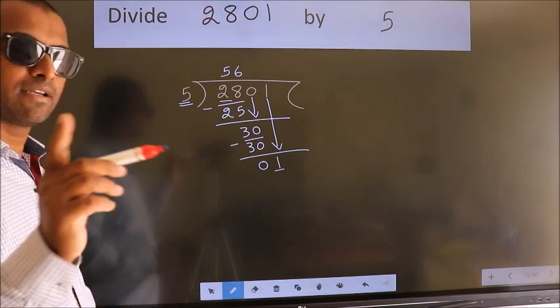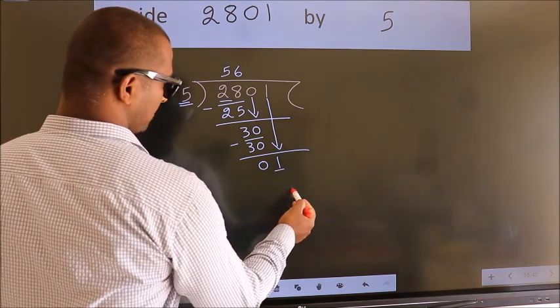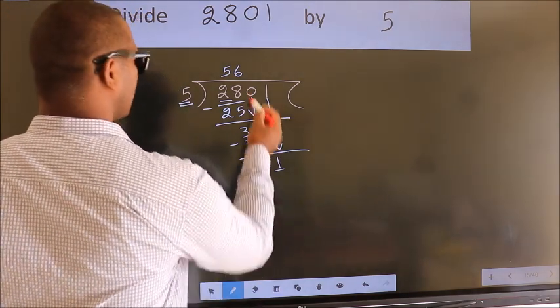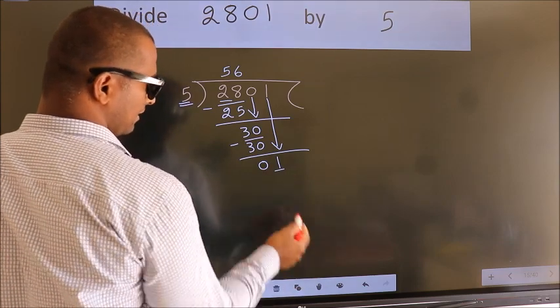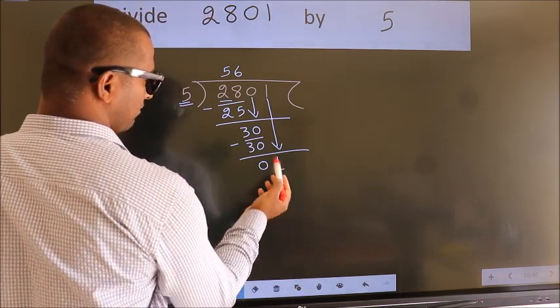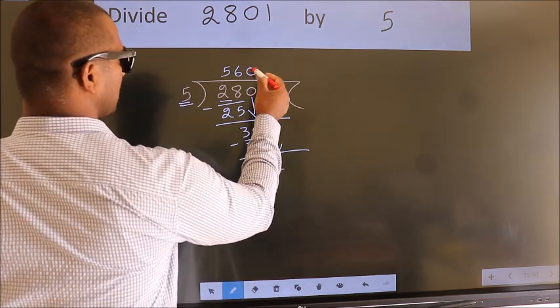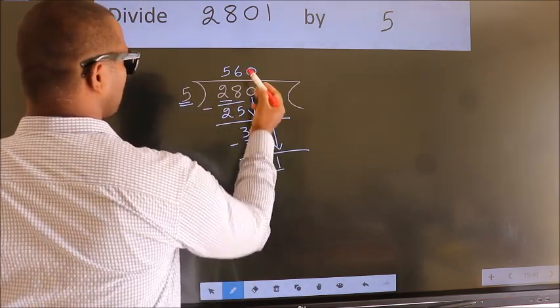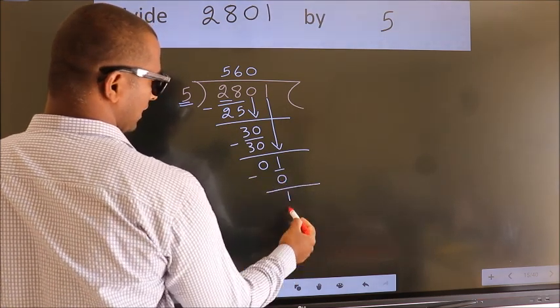Instead of that, what we should think of doing is which number should we take here. If I write 1, we get 5, but 5 is larger than 1. So what we do is we take 0 here. So 5 into 0, 0.